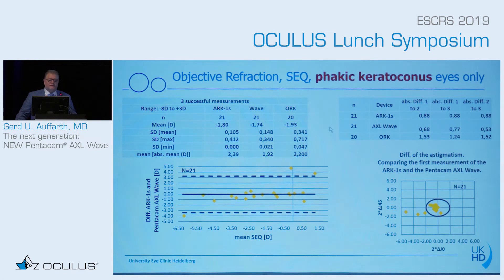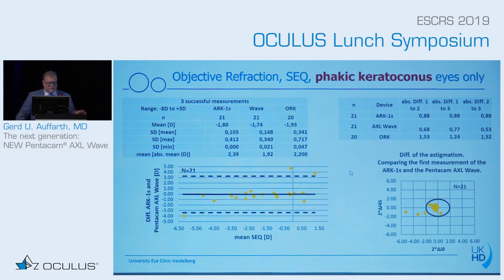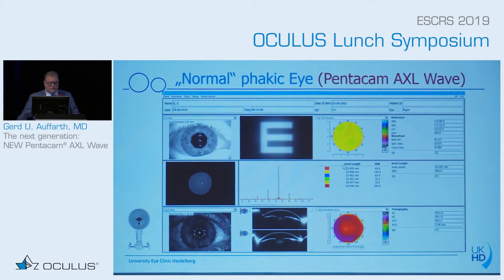However, the Schwind device was in line when we looked at the keratoconus patients. Here we have almost exactly the same values in all three machines, with very good Bland-Altman results. It's quite interesting to see that these different machines measure differently, but we had very good agreement between the Pentacam and the NIDEK device.